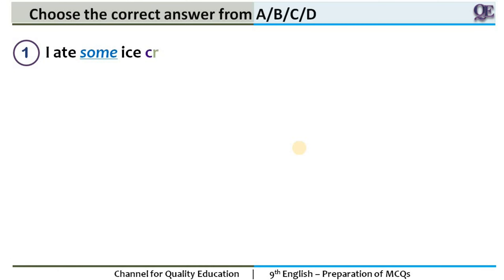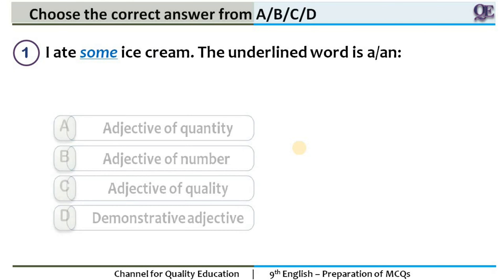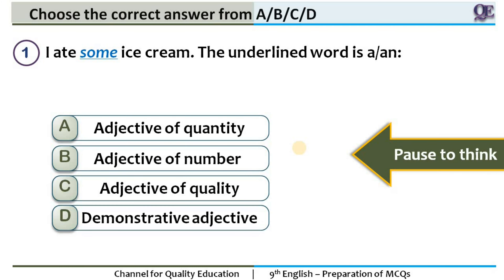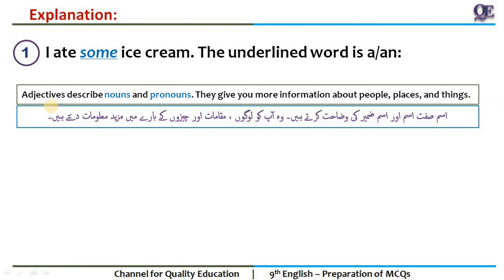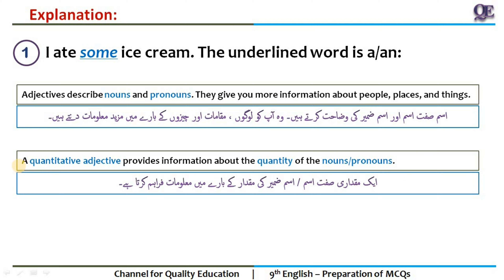Let's get started. Question number one: 'I ate some ice cream.' What is the underlined word? You have four options and 10 seconds to think about it, after which I will give you the answer and reason. The answer is adjective of quantity. Let's look at the explanation. Adjectives describe nouns and pronouns — they give more information about people, places, or things.